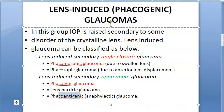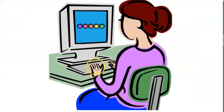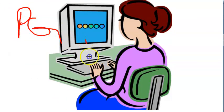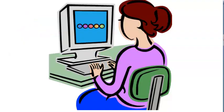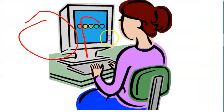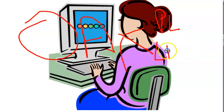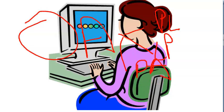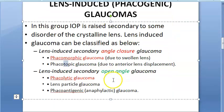There are many terminologies here. Phacogenic is the bigger term. Then you have phacomorphic, phacotopic due to anterior dislocation, and for open angle you have phacolytic, lens particle, and phacoanaphylactic or phacoantigenic. Let us look at each of these separately.